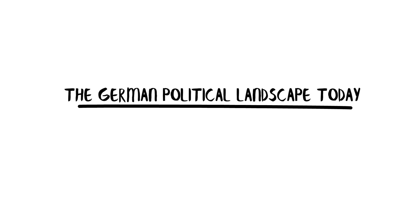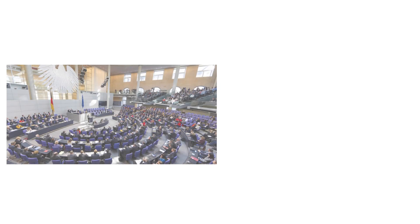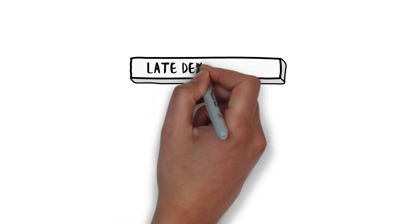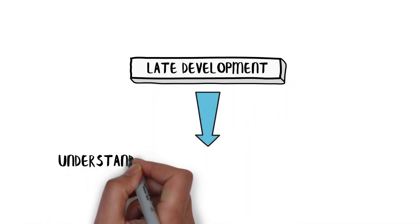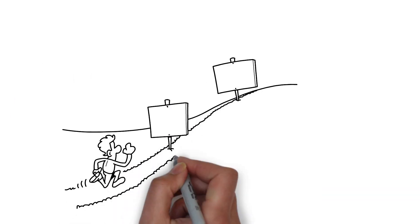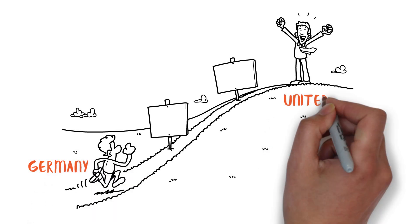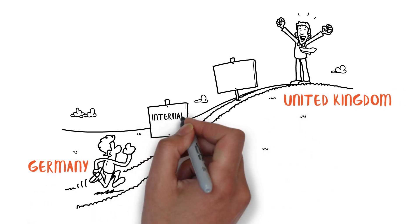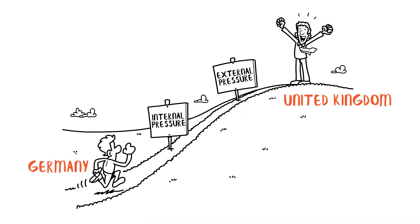Fast forward to the present and Germany stands as one of the world's most stable democracies and economies — though this path wasn't smooth. The concept of late development plays a crucial role in understanding Germany's political evolution. Post-Industrial Revolution, Germany was playing catch-up with established powers like the United Kingdom. This rapid development brought significant internal and external pressures, laying the groundwork for the complex political landscape we see today.